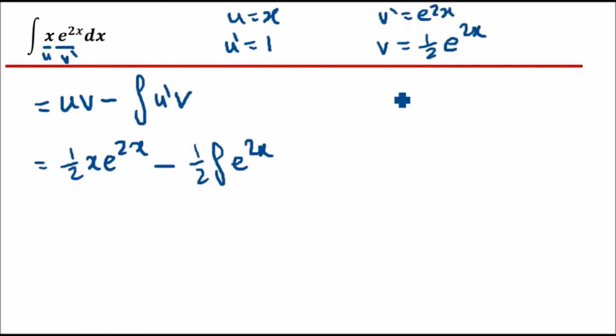And we already know what integral e to 2x is: actually half e to the power 2x. So then this can be half times, also be a quarter here. So the final solution would be half x e to the power 2x minus half times half e to 2x, to be a quarter e power 2x, and that's it.